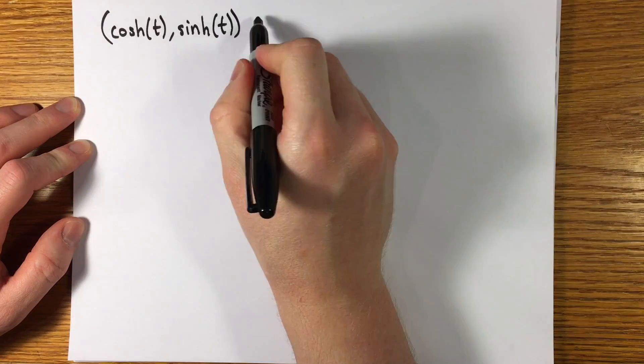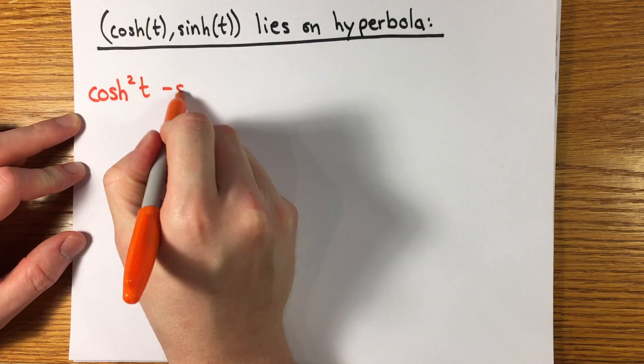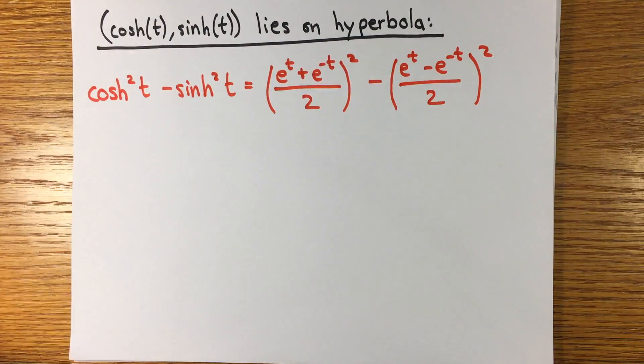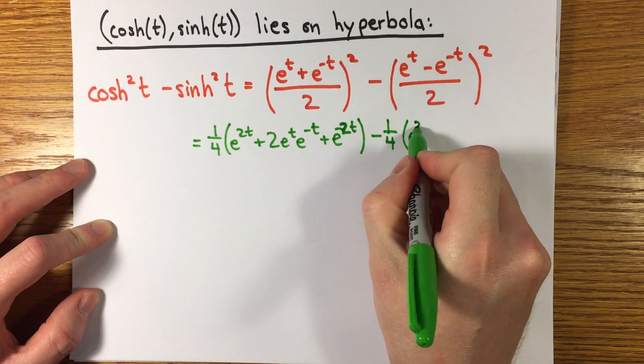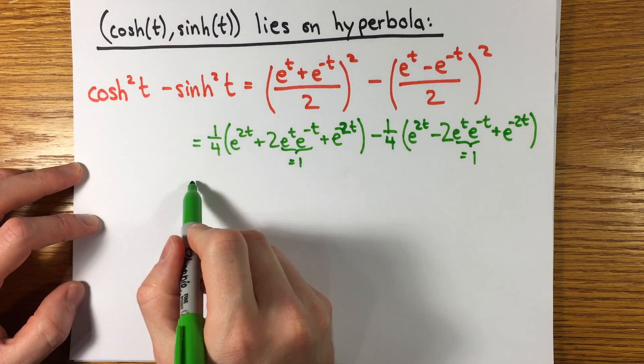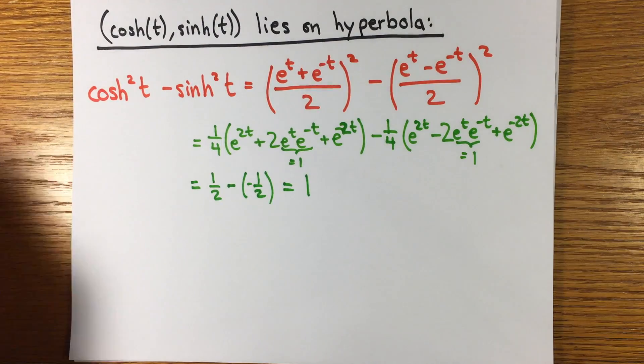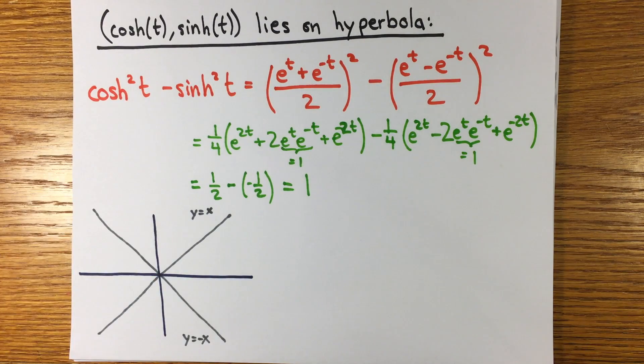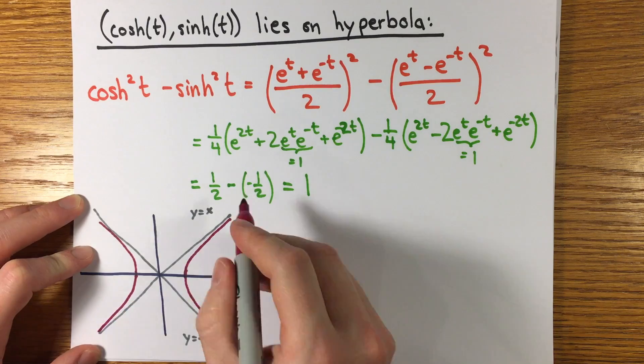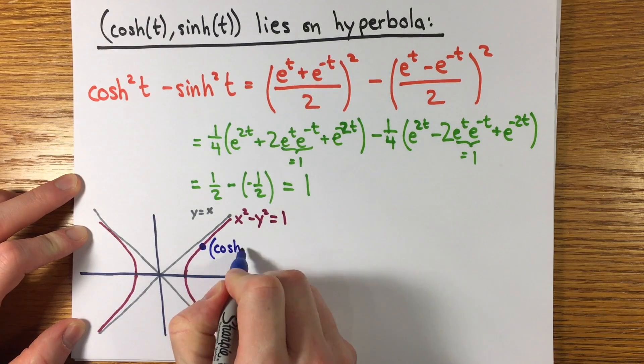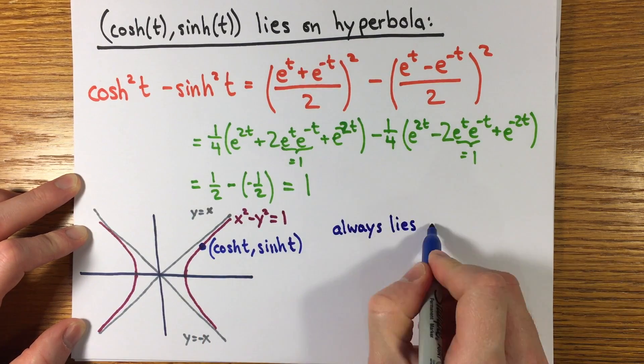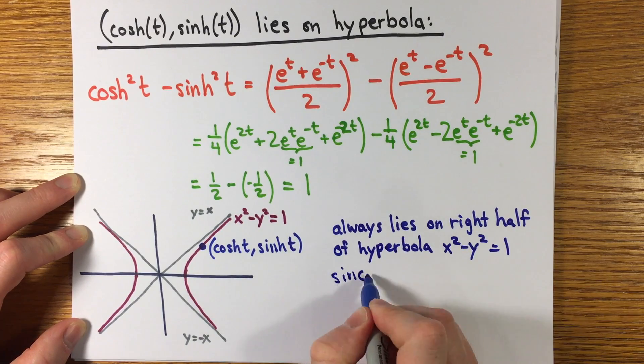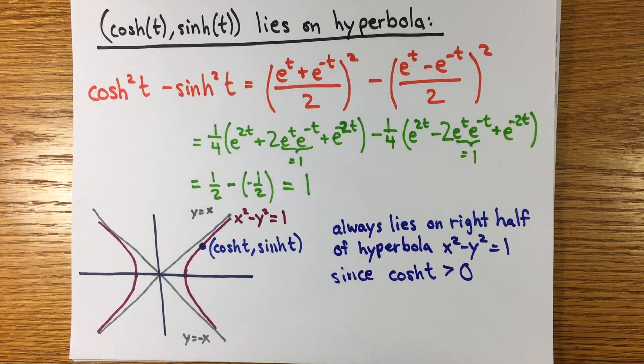Now it's just a matter of simple algebra and the properties of the exponential function to observe that there's an identity cosh squared of t minus sinh squared of t equals 1. So for any real t, the point cosh t sinh t lies on the right half of the unit hyperbola with equation x squared minus y squared equals 1. Here I've drawn the hyperbola together with its linear asymptotes y equals x and y equals minus x.